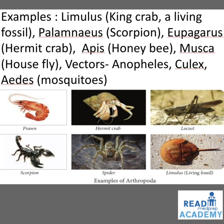Examples of Arthropoda: Limulus called the king crab, which is a living fossil; Palamneus, scorpion; Eupagurus, hermit crab; Apis, honeybee; Musca, housefly. The vectors are Anopheles, Culex, and Aedes, which are all mosquitoes. In the images you can see prawn, hermit crab, locust, scorpion, spider, and Limulus which is a living fossil today.